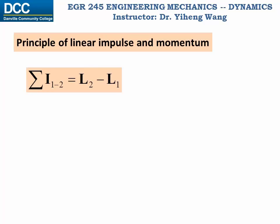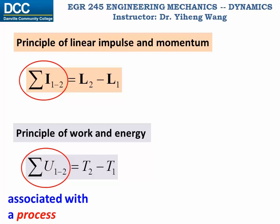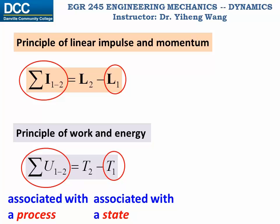You might notice a similarity with the principle of work and energy. Despite the similarity in format, the left-hand side of both equations represents parameters caused by external forces associated with a process, and the right-hand side parameters are both associated with the state of the particle. The key difference is that work and energy are scalars, whereas linear impulse and momentum are vectors.